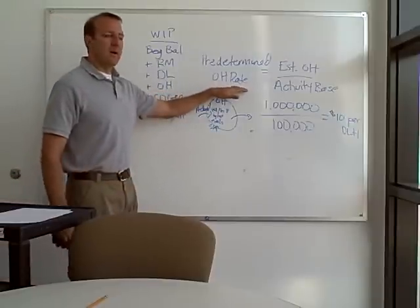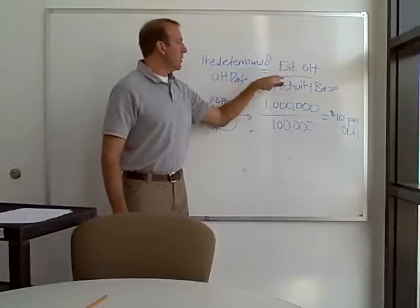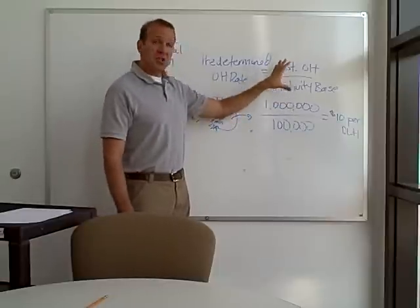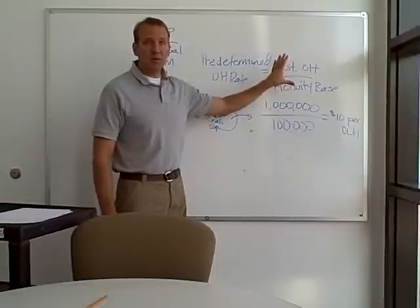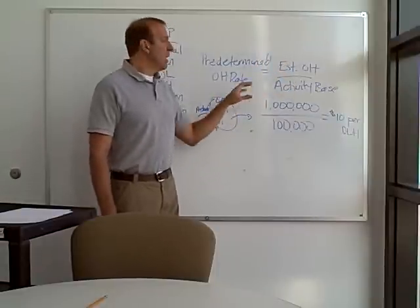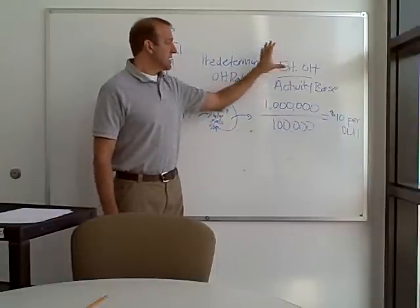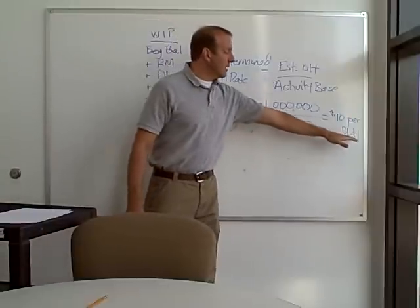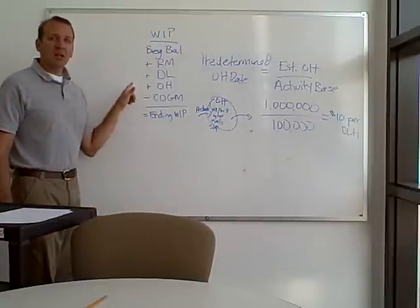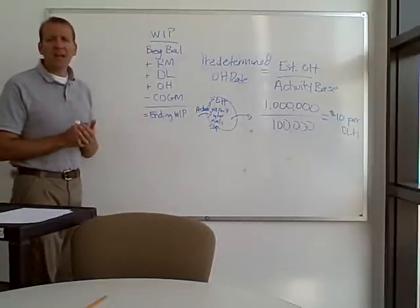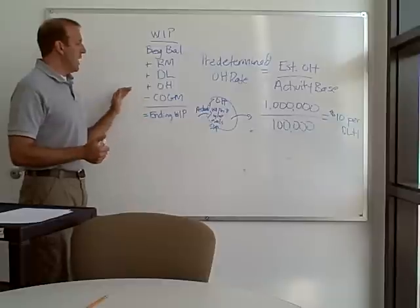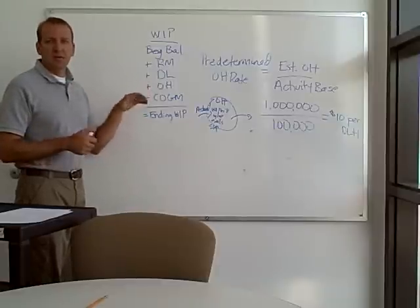We used a predetermined overhead rate — we estimate overhead and divide it by some sort of activity base. This information has to be given to you in any problem; you can't guess it. You'd calculate the overhead rate, and then they'd tell you how many direct labor hours or whatever the activity base is. If it was square footage, you'd need to know how much square footage the chairs have.